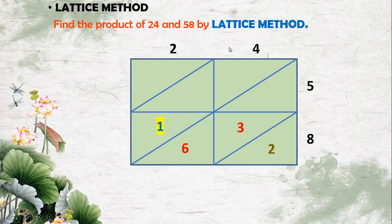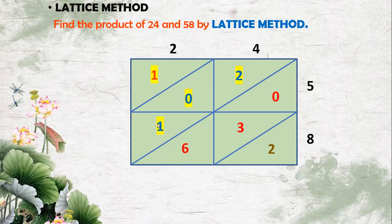Next we multiply 5 with 4: 5 into 4 equals 20 — 0 goes in the lower triangle and 2 goes in the upper triangle. After that, we multiply 5 with 2: 5 into 2 equals 10 — 0 goes in the lower triangle and 1 goes in the upper triangle. Now we have all the products of the given digits.